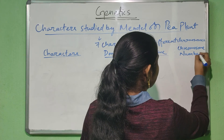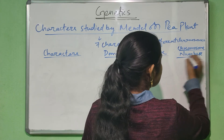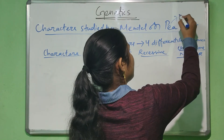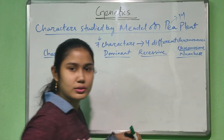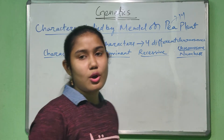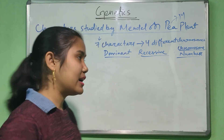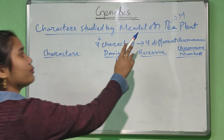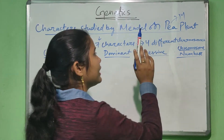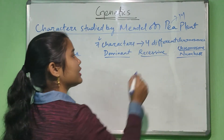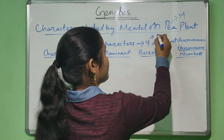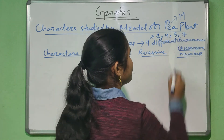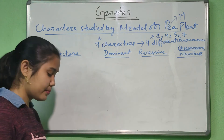How many chromosomes are there in pea plant? There are 14 chromosomes — seven pairs or 14 chromosomes. The characters which Mendel studied are located in four different chromosomes: chromosome number one, chromosome number four, chromosome number five and chromosome number seven.